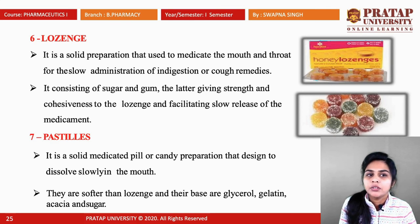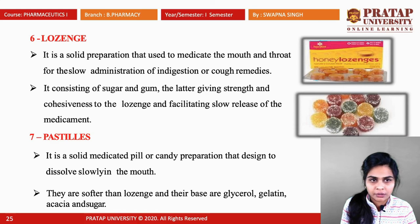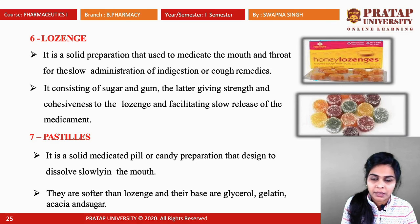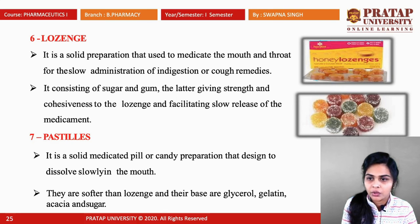Lozenges are solid preparations used to medicate the mouth and throat for the slow administration of indigestion or cough remedies. They consist of sugar and gums, the latter giving strength and cohesiveness and facilitating slow release of the medicament. Pastilles are also solid medicaments — pill or candy preparations designed to dissolve slowly in the mouth — but they are softer than lozenges. The basis for preparation of pastilles includes glycerol, gelatin, and acacia.